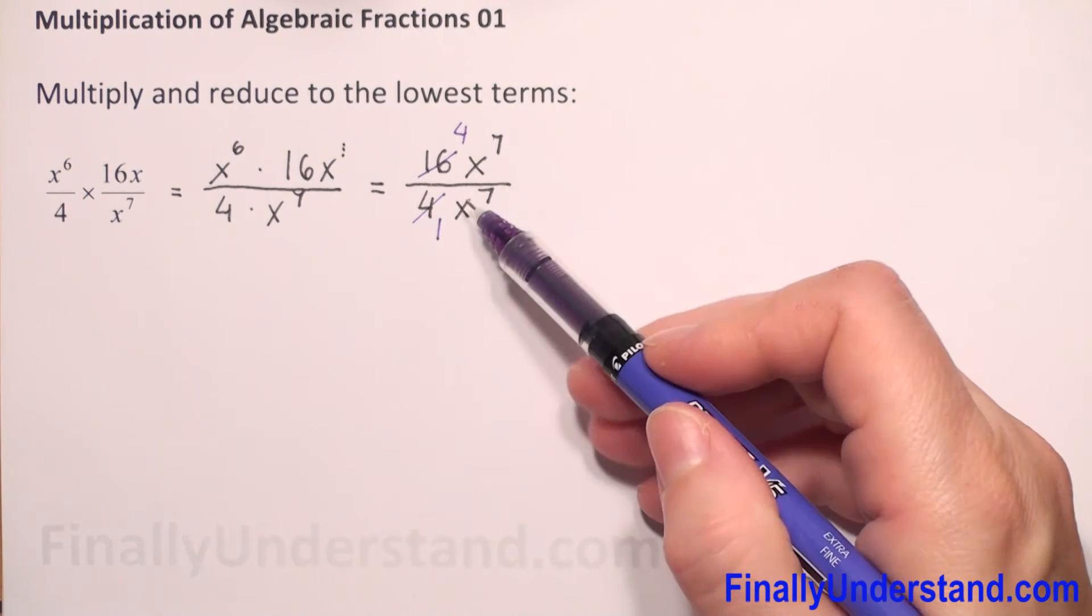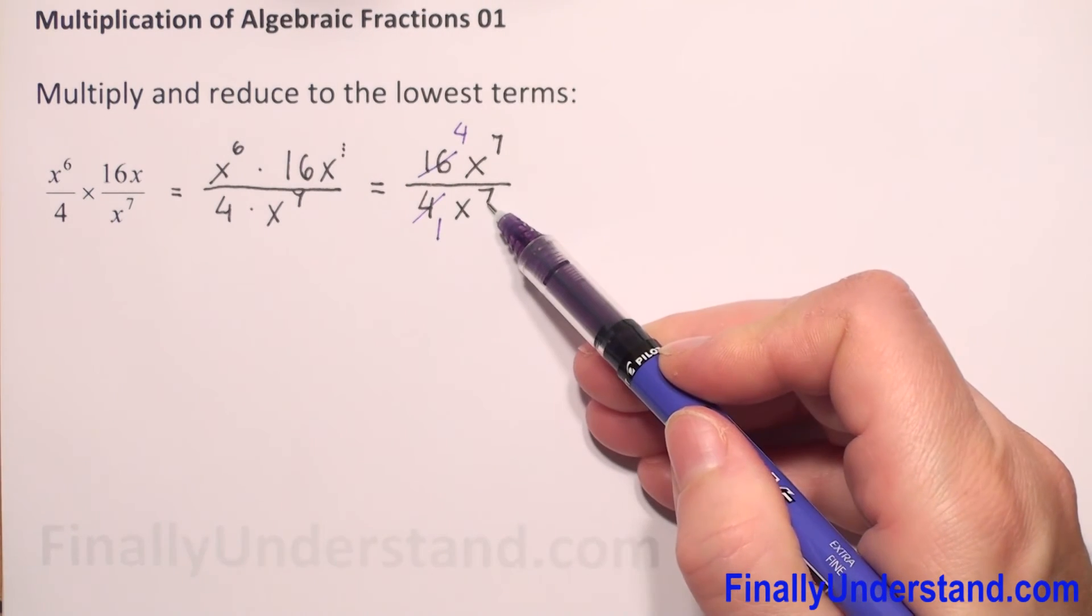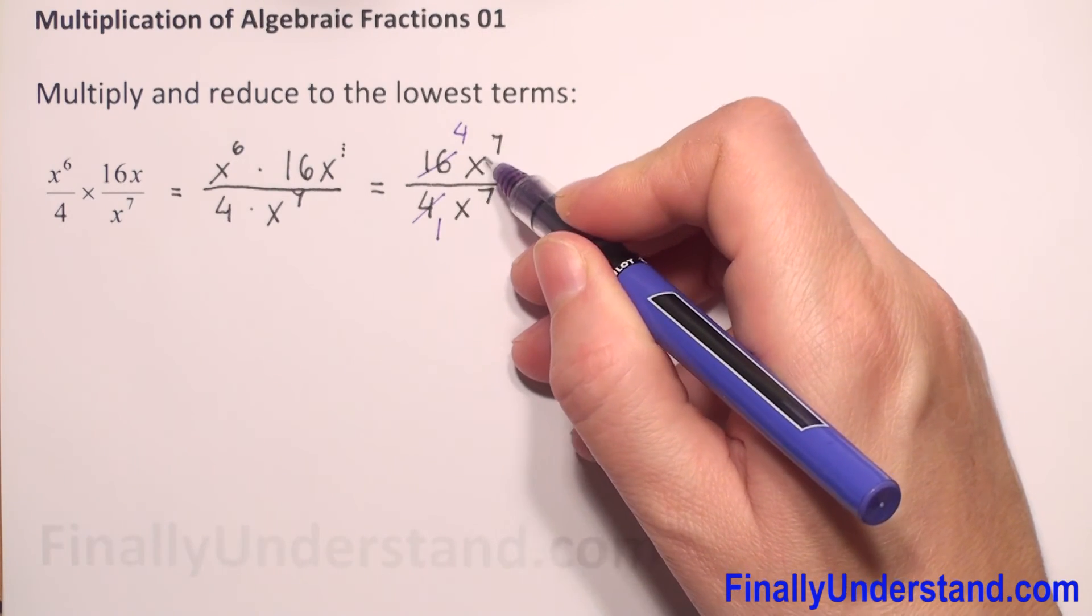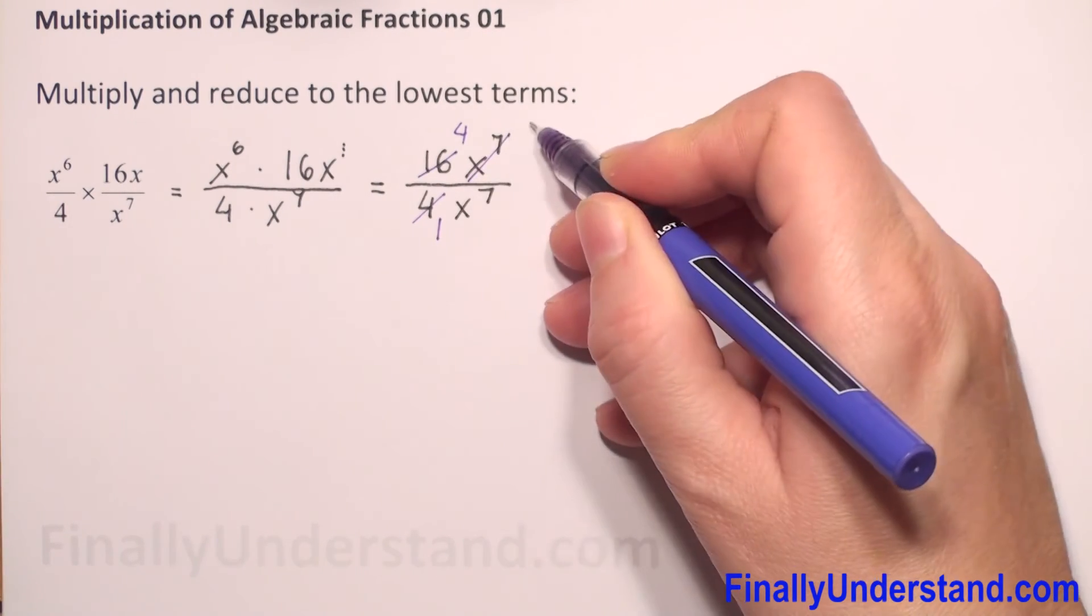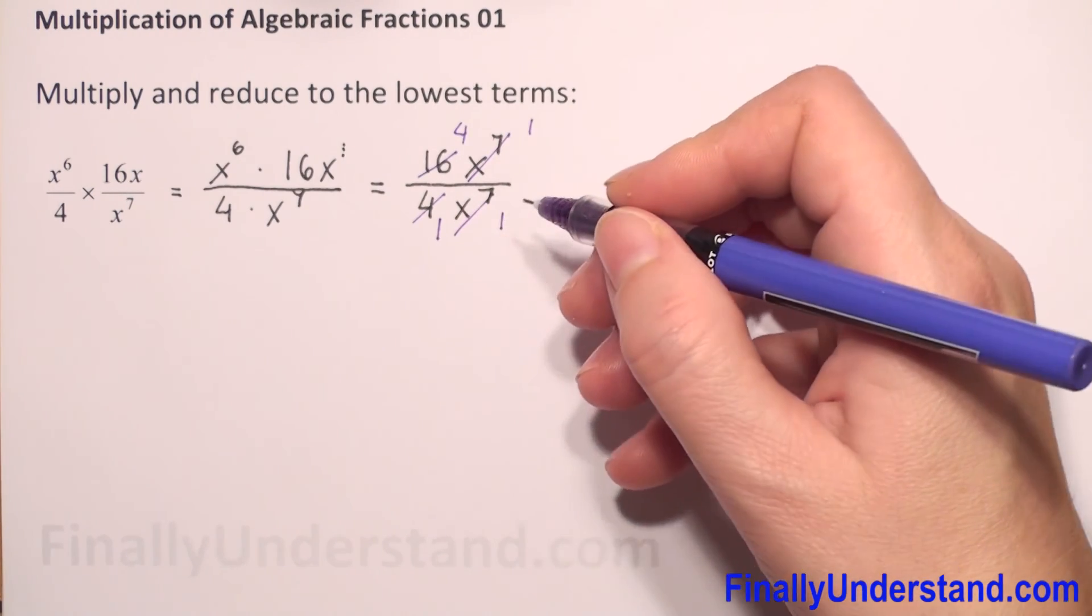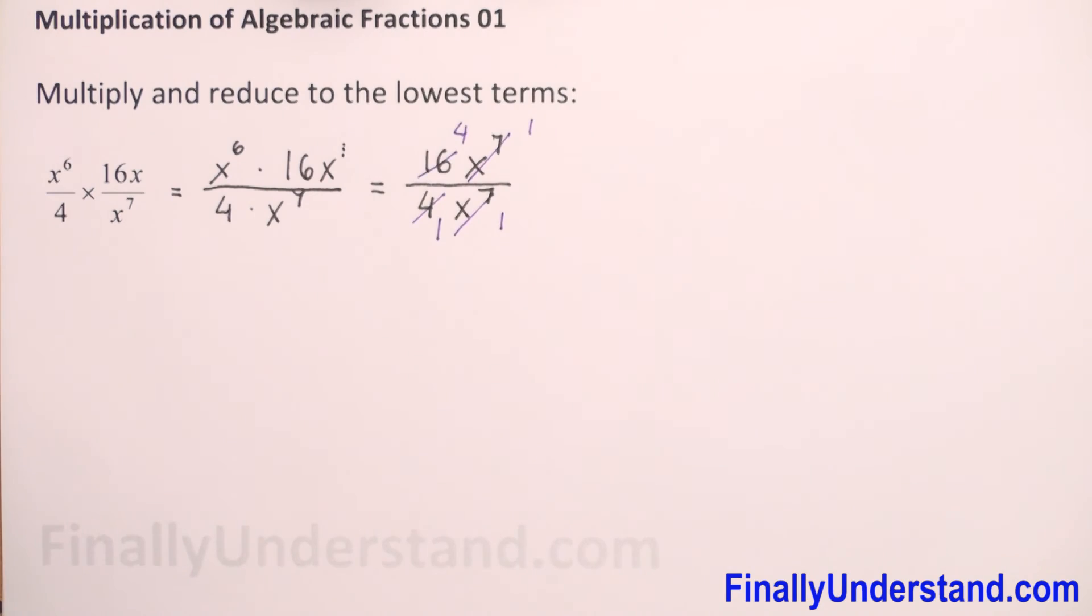Next we have x to the 7th power and x to the 7th power. This whole term will reduce. x to the 7th power divided by x to the 7th power is 1. The same in the denominator. Now we can multiply.